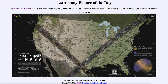Greetings and welcome to the introduction to astronomy. One of the things that I like to do in each of my introductory astronomy classes is to begin with the Astronomy Picture of the Day from the NASA website — that is apod.nasa.gov/apod. Today's picture for April 18th of 2023 is titled 'Map of the Total Solar Eclipse Path in 2024 April.'